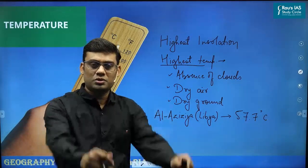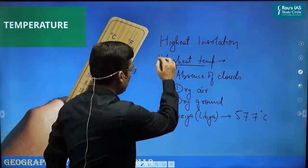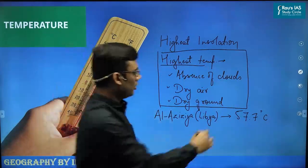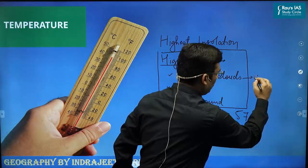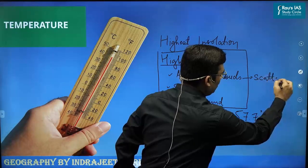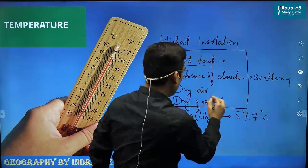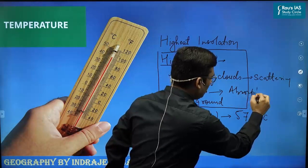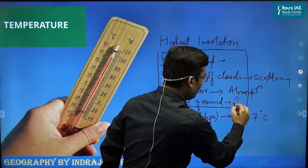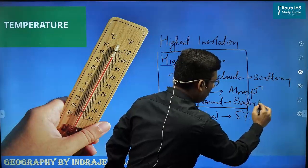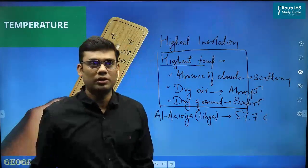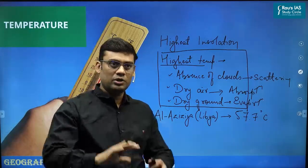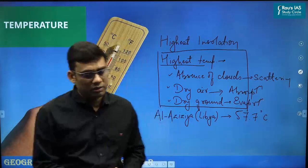To be specific: with respect to absence of clouds, we talk about scattering; with respect to dry air, we talk about absorption; and with respect to dry ground, evaporation is not taking place. So temperatures are extremely high in this particular region.